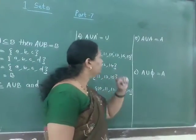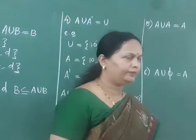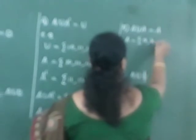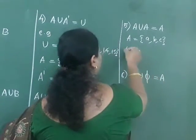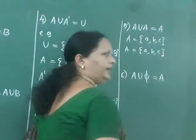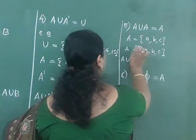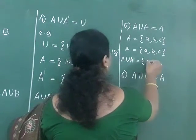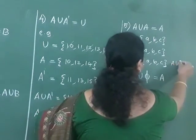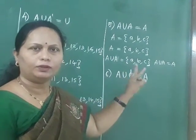Now, the fifth property: A union A is equal to A. For example, if set A contains the letters A, B and C, and again set A contains the same letters A, B and C, then A union A is equal to A, B and C. Therefore, here we get A union A is equal to A. This is the fifth property.